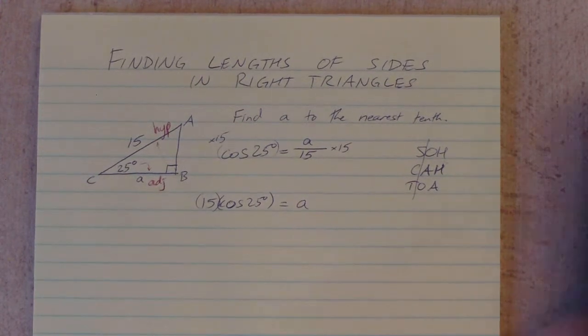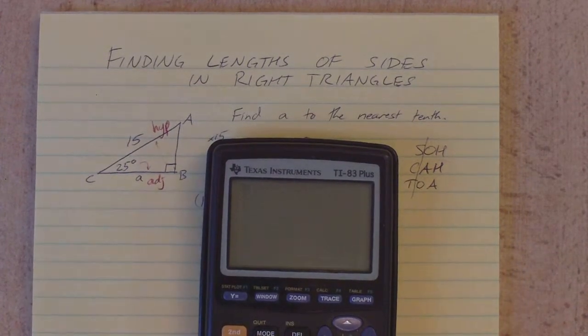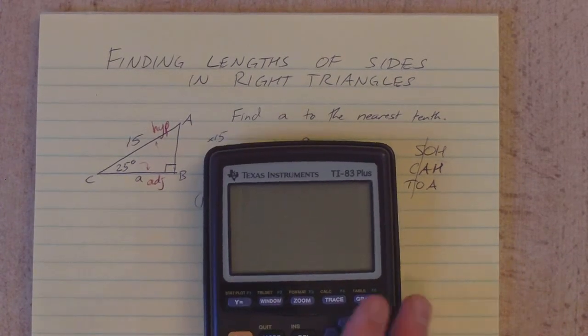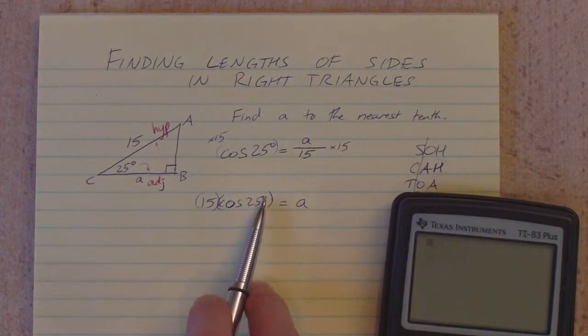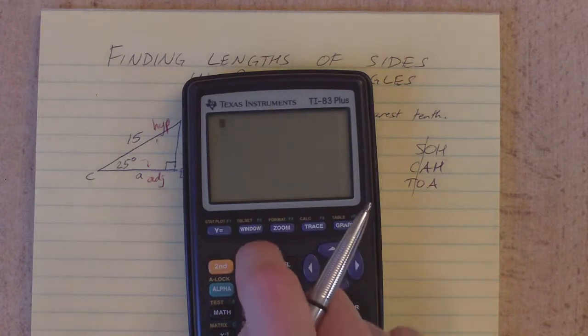Cosine of 25 degrees is the length of my side A. Now, I can grab my calculator. Well, actually, before I type anything, I need to check that I'm in degree mode. We're working with angles and measurements in units of degrees. So when you grab your calculator, first thing you need to do is check that you're in degree mode.